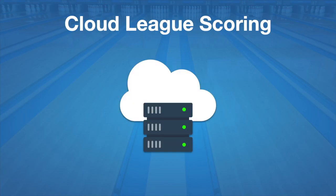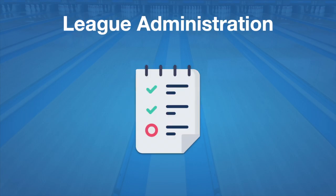The second component is our cloud league scoring. This integrates directly with your scoring system for opening league on the lanes and automatic league standings updates. The final component is our league administration. This helps centers create leagues, update league rules, create and modify teams, and many more league processes and tasks. All of these work together in the cloud to bring a completely integrated and modern league experience to you and your bowlers.